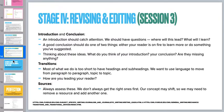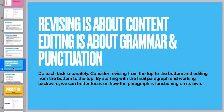Then we move to revising and editing. Revising is about content, whereas editing is about grammar and punctuation. Ideally, we're going to do these separately, because when we're looking at content, it's a different part of our brain than grammar and punctuation. Generally, I encourage you to revise from top to bottom, because you're looking at how everything is moving together as a whole. Then edit from the bottom to the top — start with that final paragraph, ask what it is doing, is the grammar good, is the punctuation good, and then move up paragraph by paragraph.